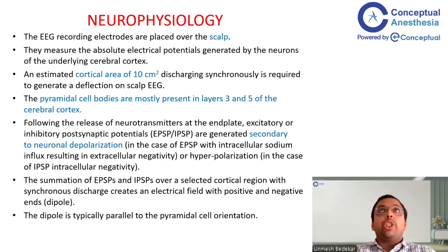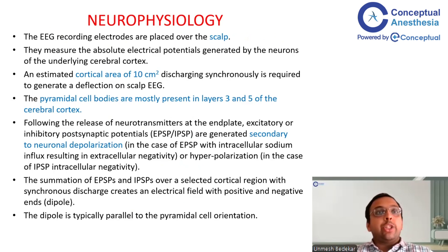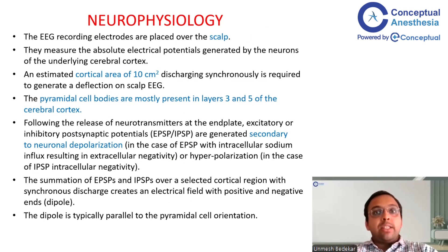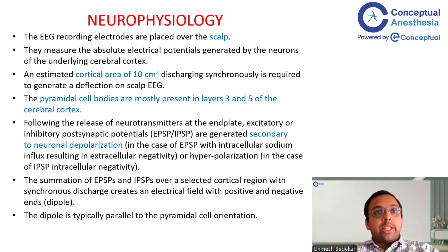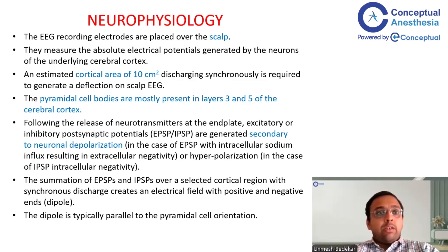Regarding the neurophysiology of EEG: recording electrodes are placed over the skull, measuring absolute electrical potentials generated by neurons of the underlying cerebral cortex — both cortical and subcortical signals — capturing differences in voltage. An estimated cortical area of around 10 cm² discharging synchronously is required to generate a deflection on scalp EEG. The pyramidal cell bodies are mostly present in layers 3 and 5 of the cerebral cortex, and following neurotransmitter release at the end plate, excitatory or inhibitory post-synaptic potentials are generated secondary to neuronal depolarization.